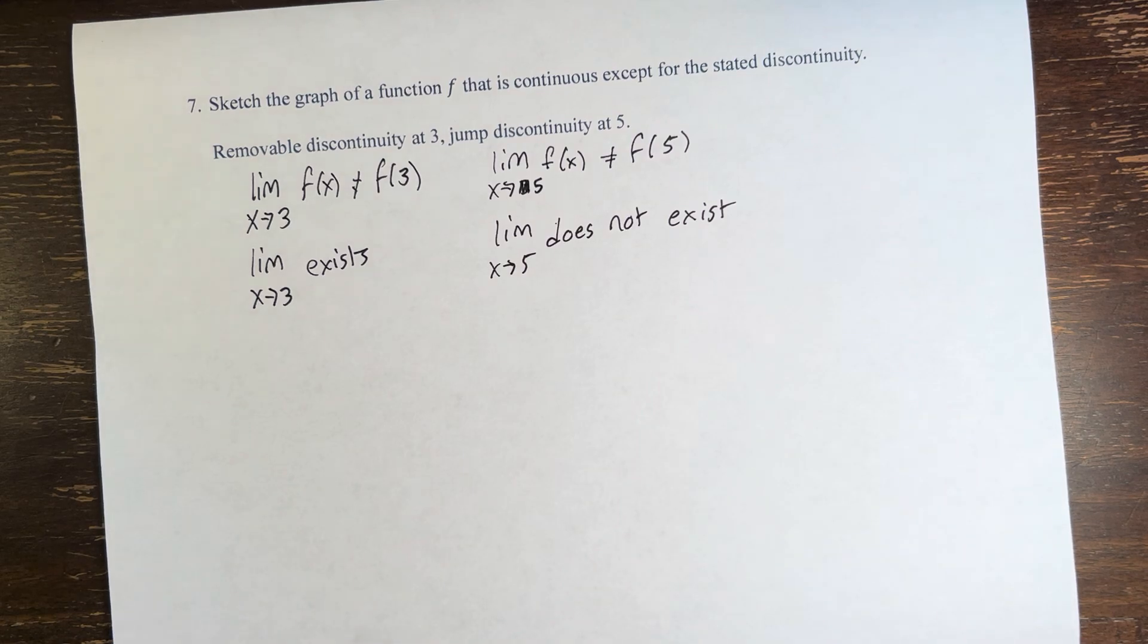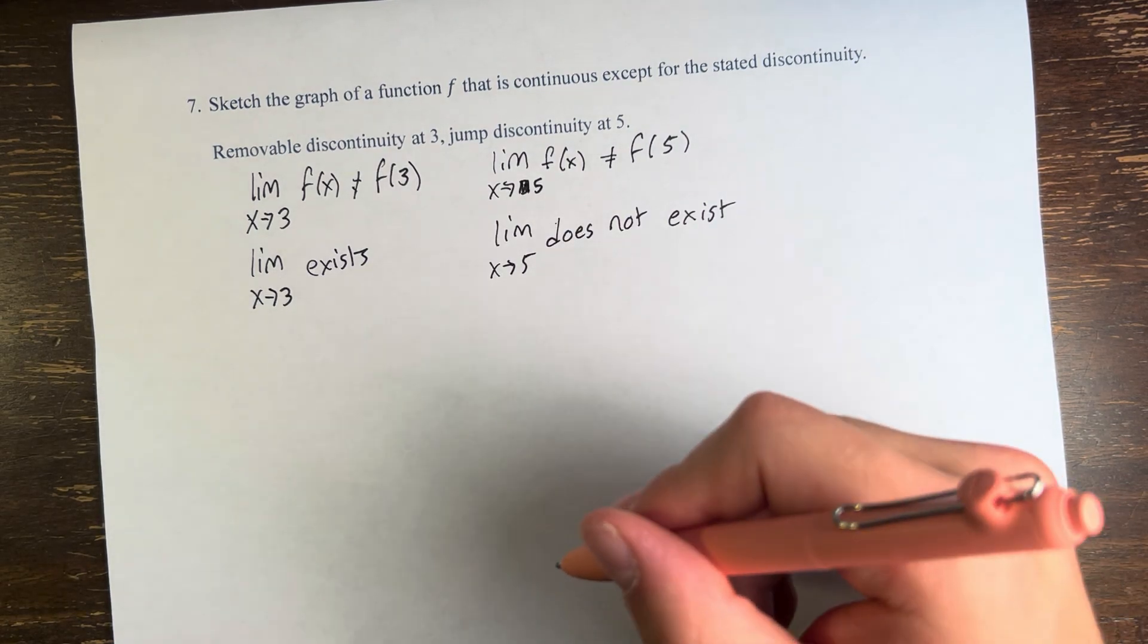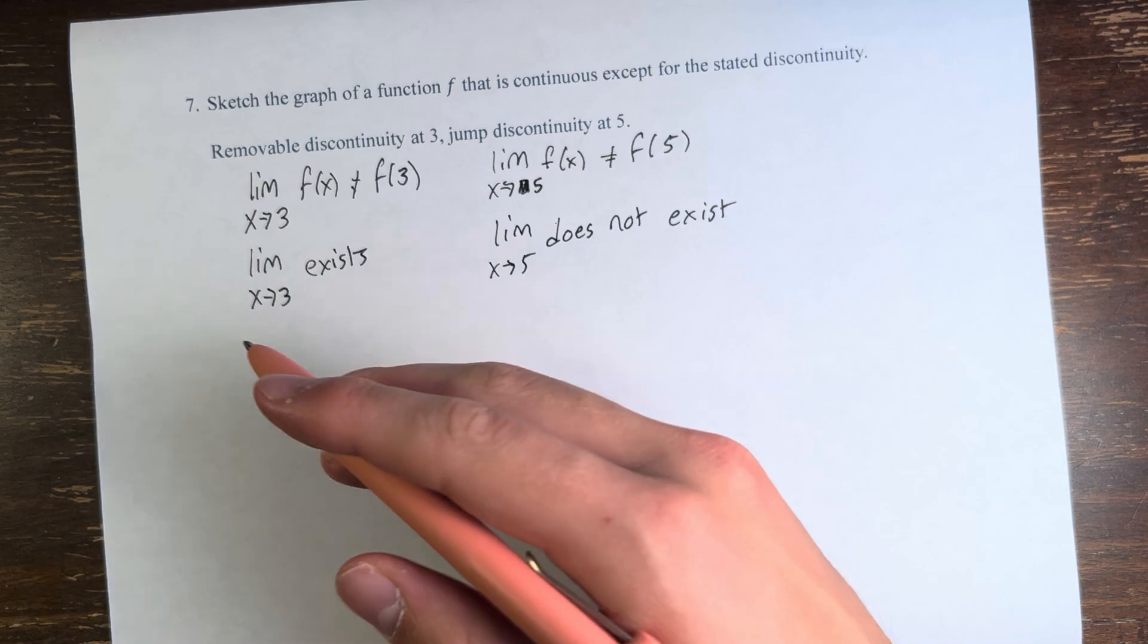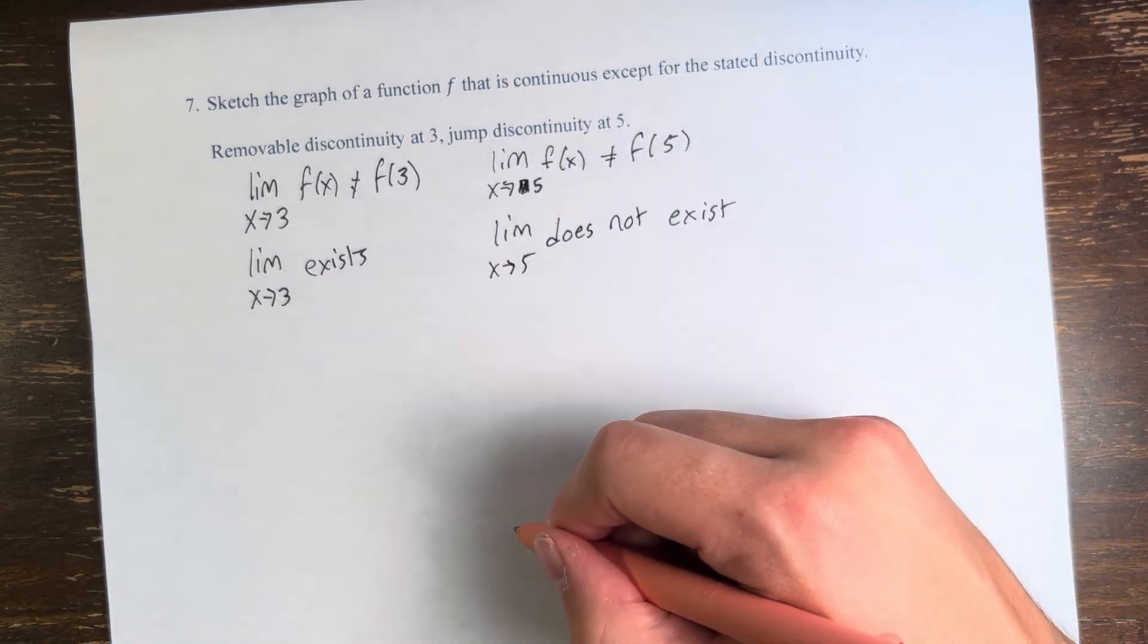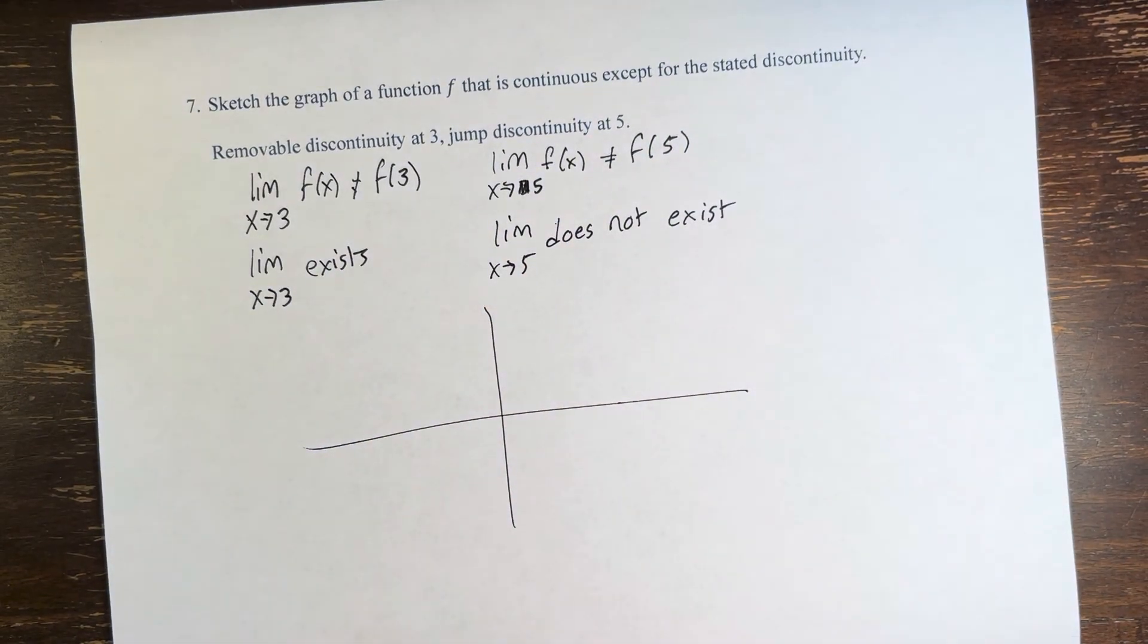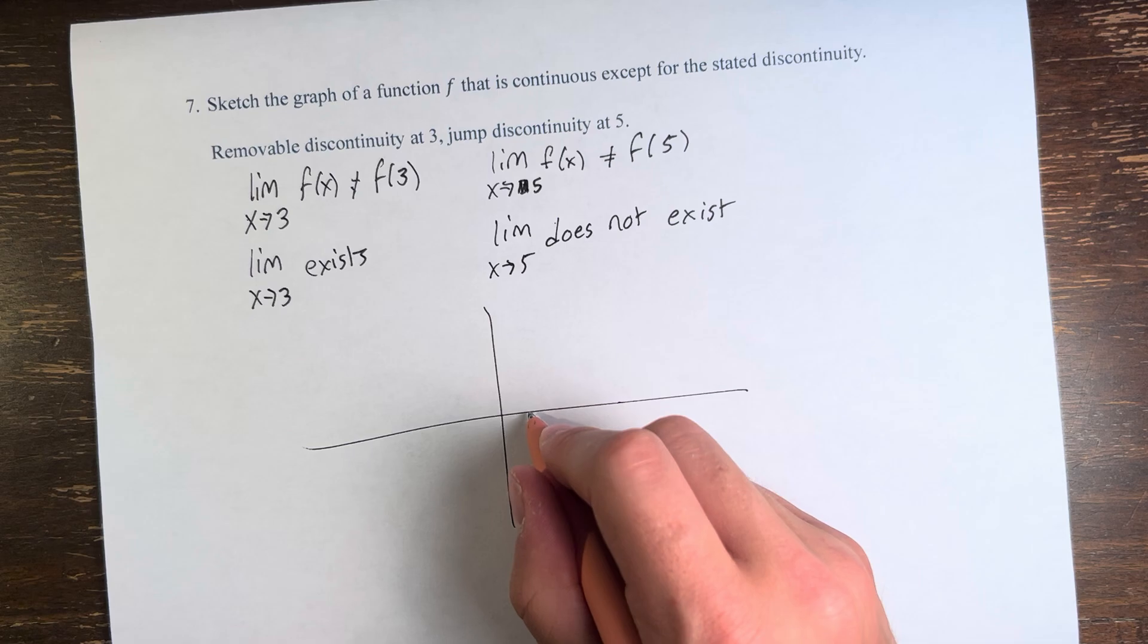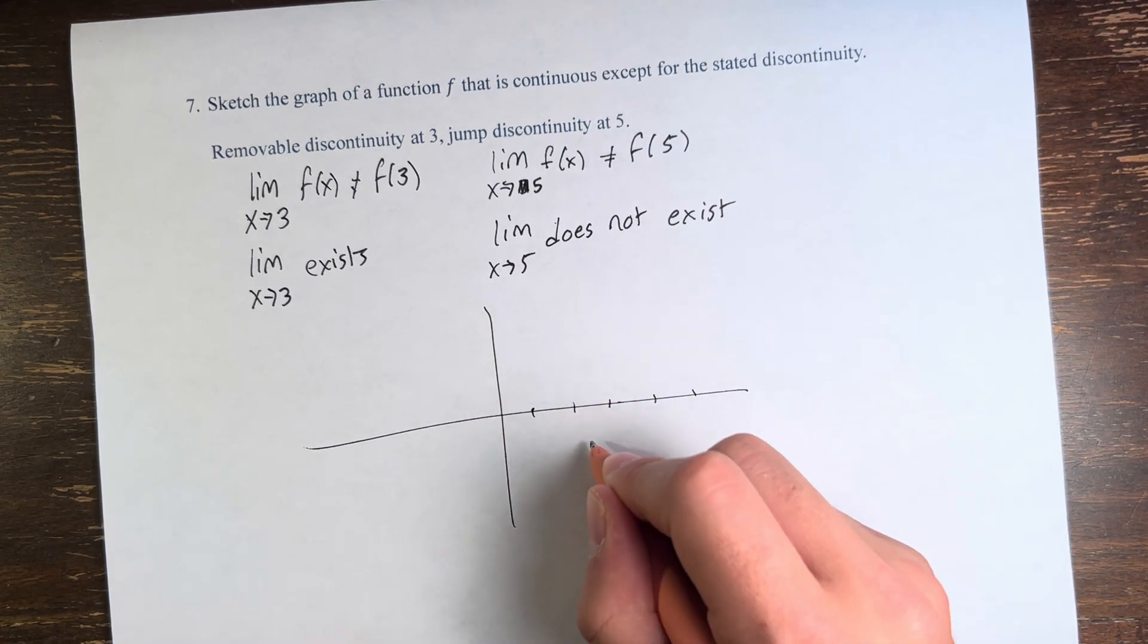So in order to see why they're called removable and jump discontinuities, let's graph this. We have x is equal to 3 and 5. So 1, 2, 3, 4, 5.